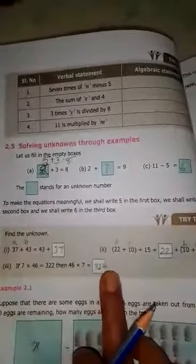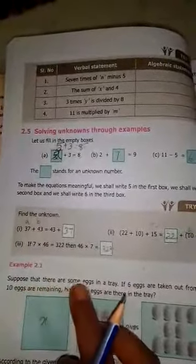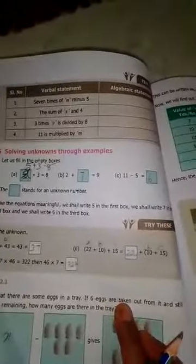Here, example one is given. Suppose that there are some eggs in a tray. If 6 eggs are taken out from it and still 10 eggs are remaining in the tray, how many eggs are there in the tray?